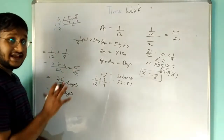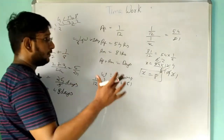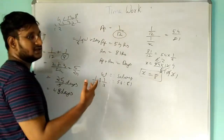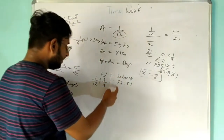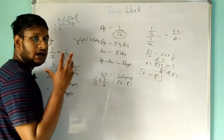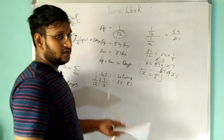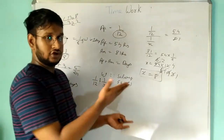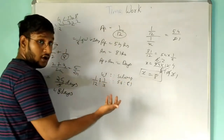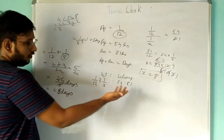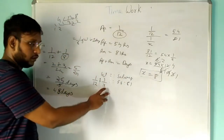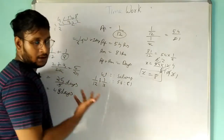The key insight in this problem is recognizing that wage is proportional to work done. The salary ratio 54:81, combined with Apurva's known rate of 1/12 per day, lets us solve for Amit's rate of 1/8 per day. Once we have both rates, we add them and find the combined time.